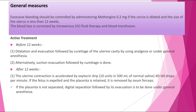General measures: excessive bleeding is controlled by administering methylergometrine 0.2 mg if the cervix is dilated and fetal size is less than 12 weeks. Blood loss is corrected by IV fluid therapy and blood transfusion. Before 12 weeks: dilation and evacuation followed by curettage of the uterine cavity under general anesthesia; alternatively, suction evacuation followed by curettage.